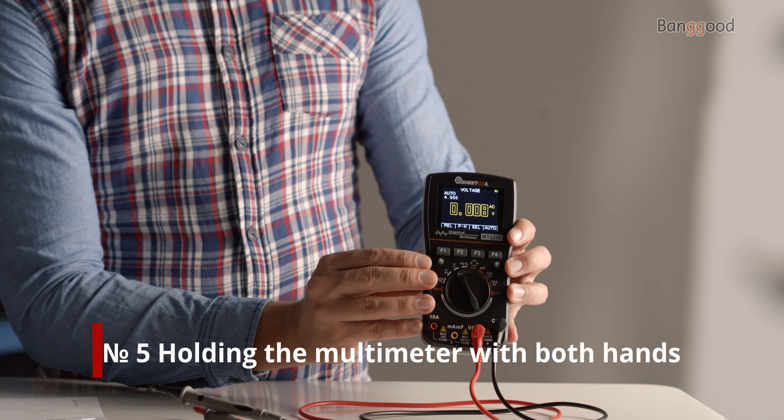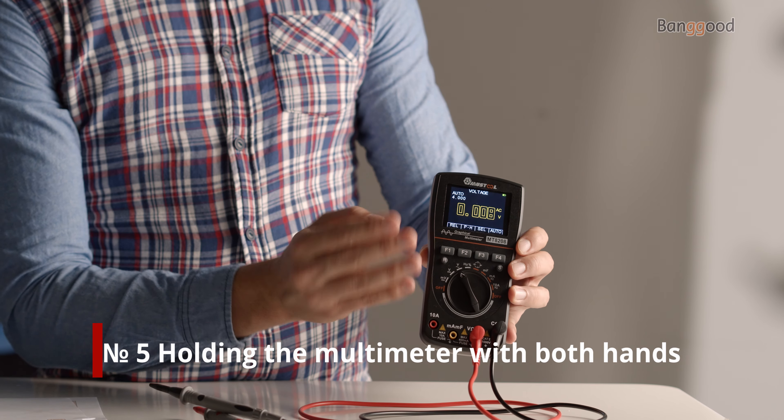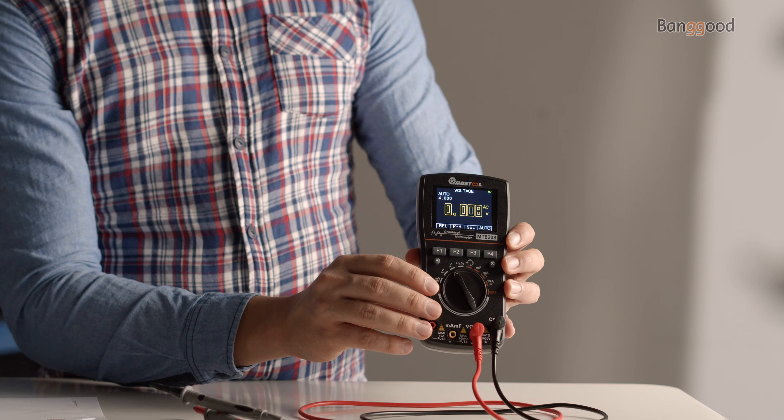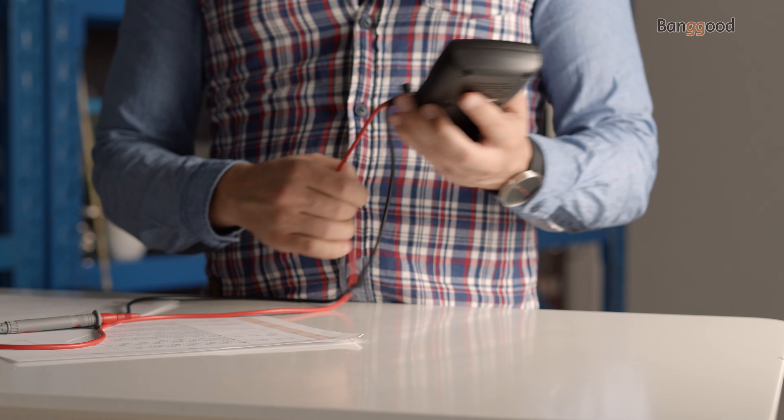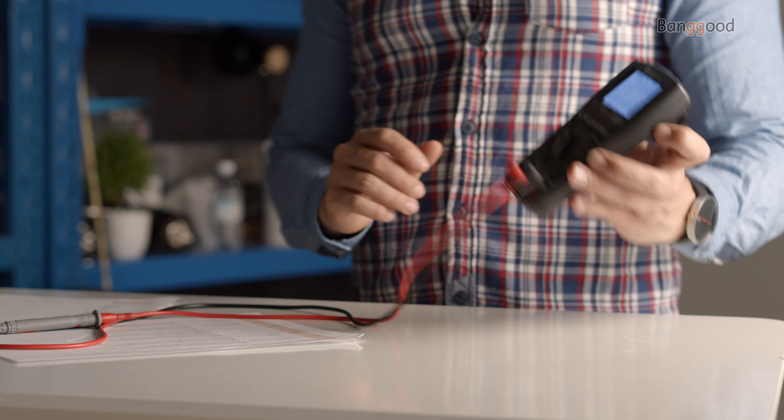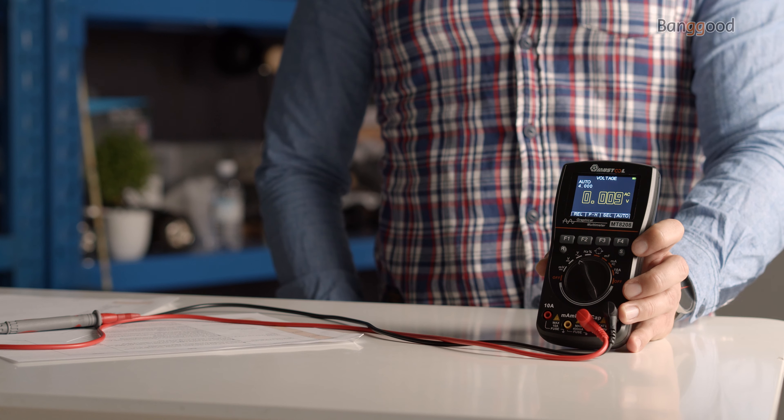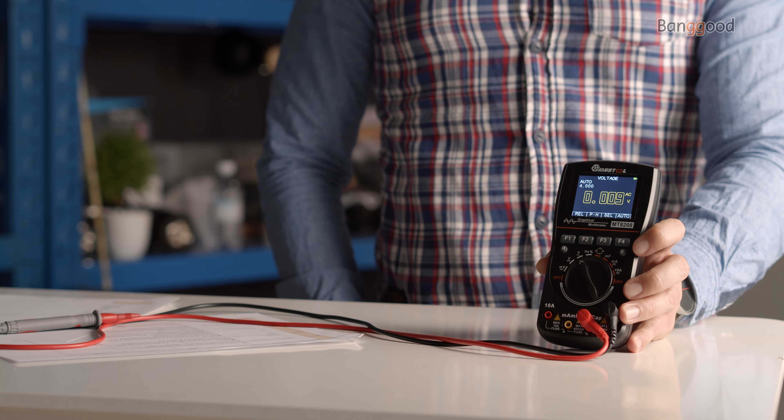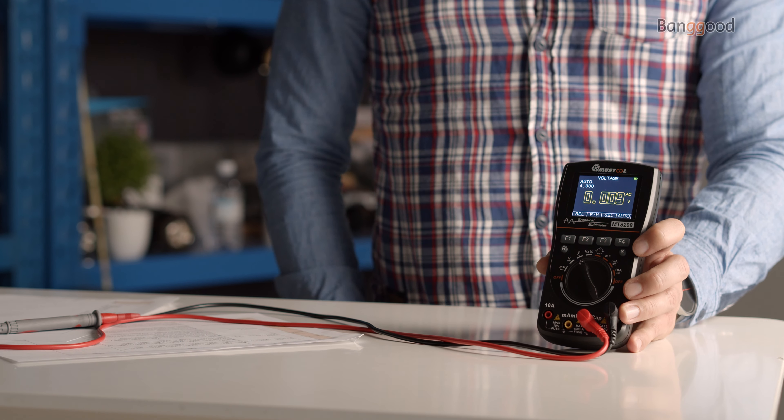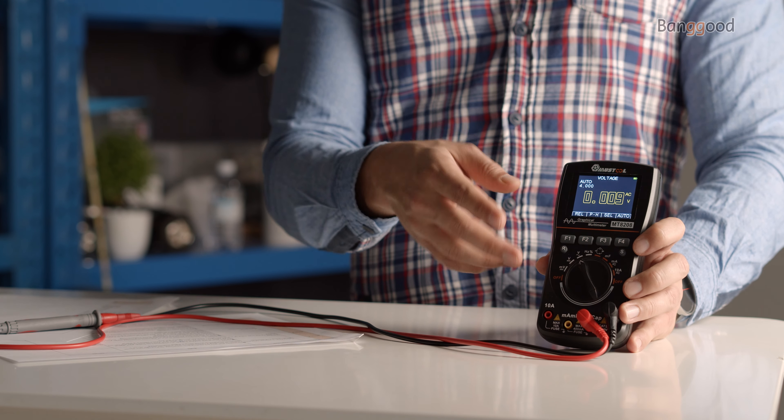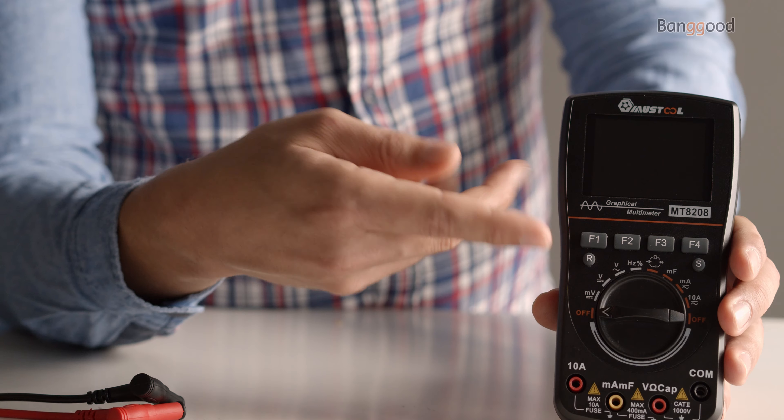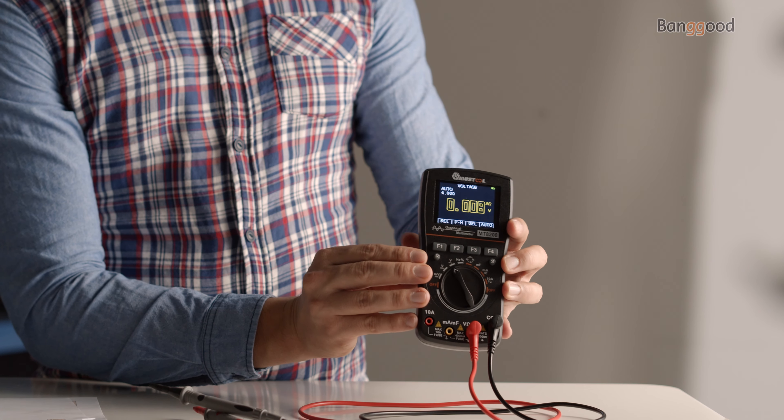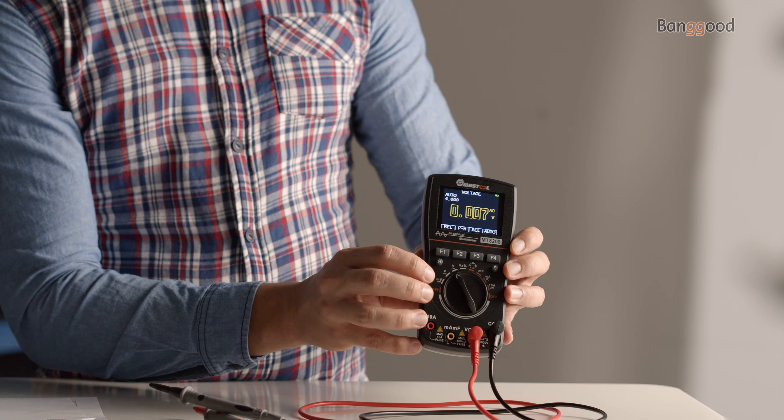And number five: holding the multimeter with both hands when testing a live circuit. Don't do it! When working with live circuits, remember the old electrician's trick: keep one hand in your pocket. That lessens the chance of a closed circuit across your chest and through your heart. Hang or rest the meter if possible. Try to avoid holding it with your hands to minimize personal exposure to the effects of transients.